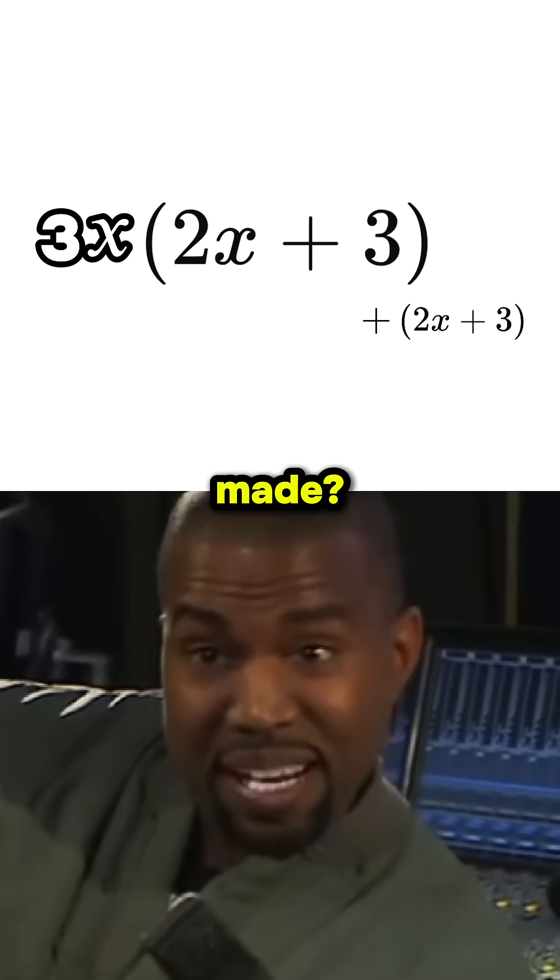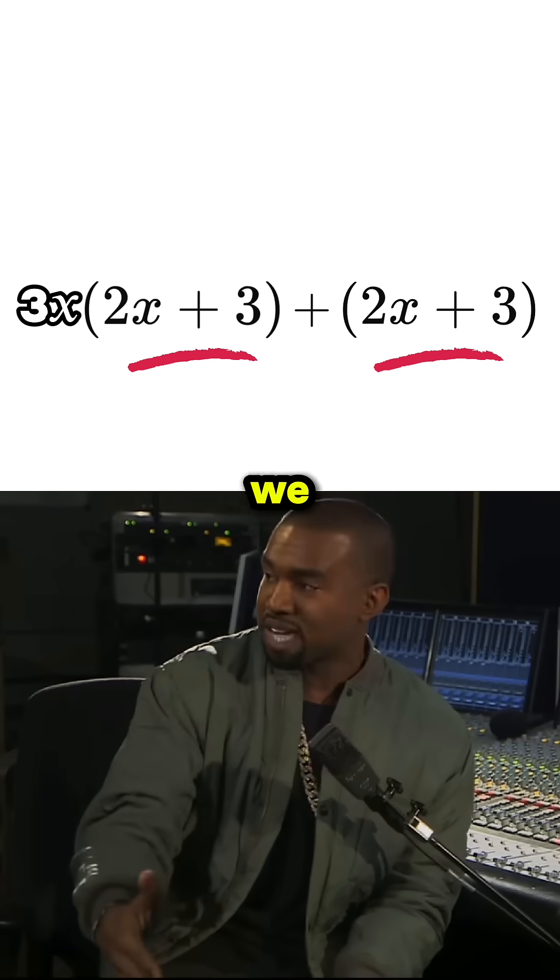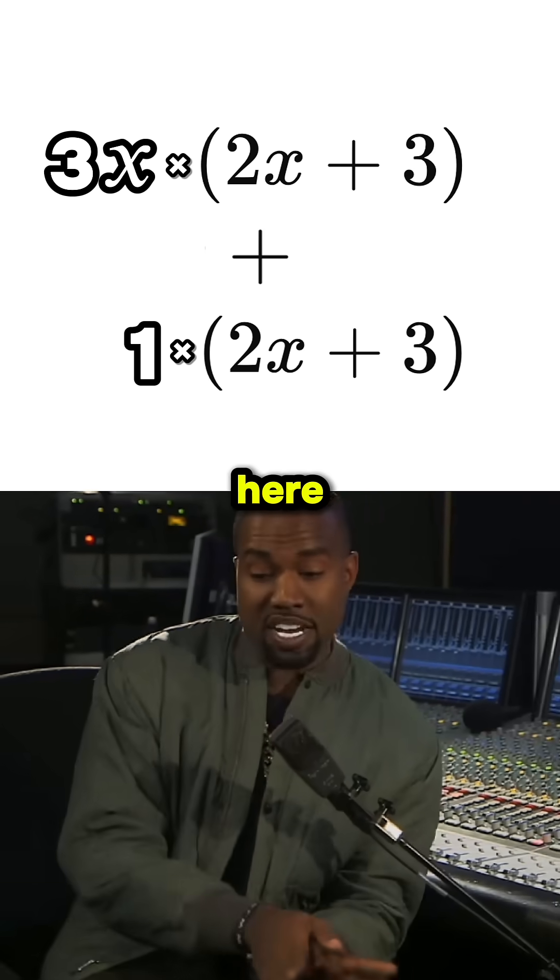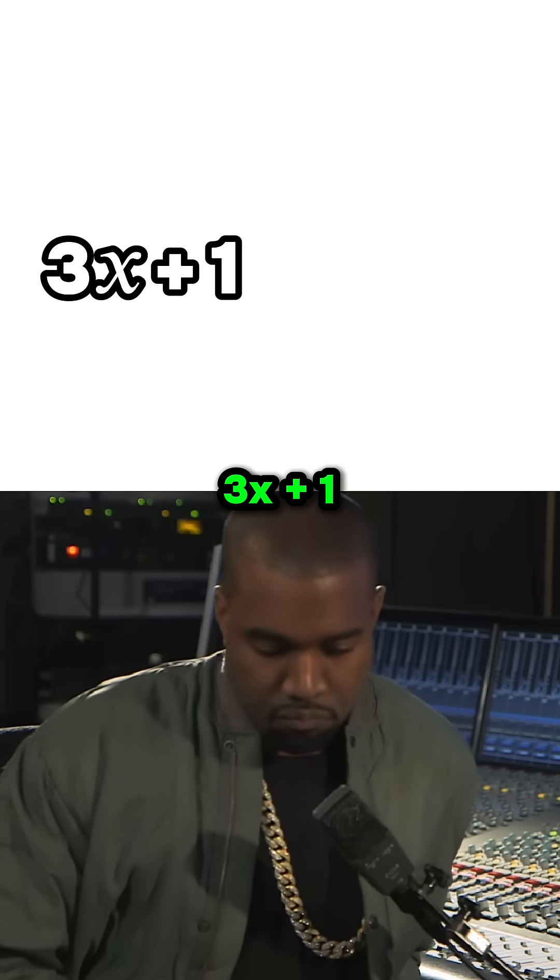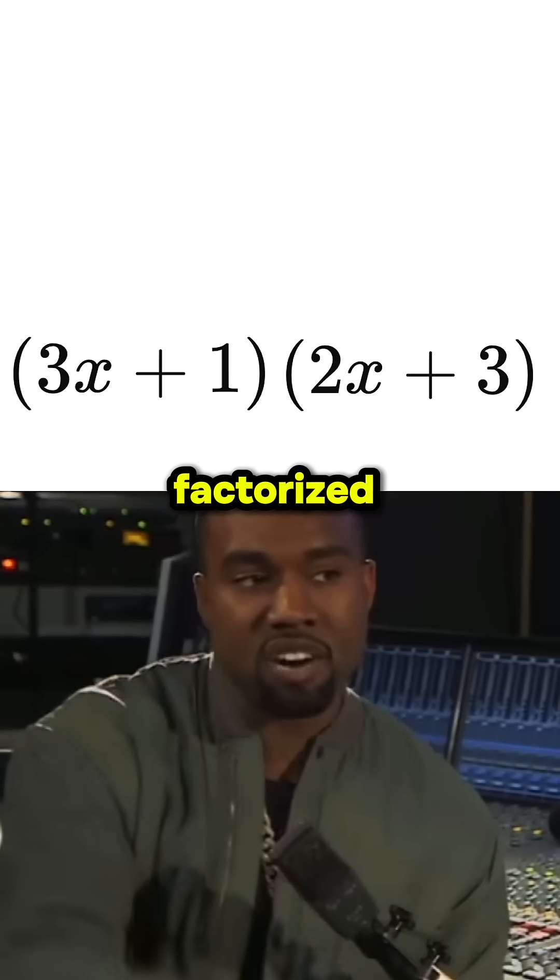Now what's special about what we just made? Oh, both of those are times in 2x plus 3. Correct. Here we got 3x amounts of 2x plus 3, and then just one 2x plus 3 over here. So how many 2x plus 3s in total? In total, we got 3x in 1. So 3x plus 1 times that 2x plus 3. That's it. We just factorized the expression.